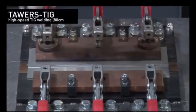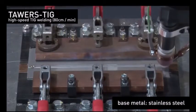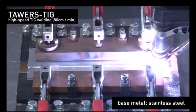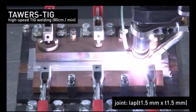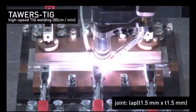First, we will show you high speed welding at 80 cm per minute using a 1.5 mm thick plate of stainless steel. The first half will show continuous welding and the second half will show arc spot welding which shortens the start-up time.